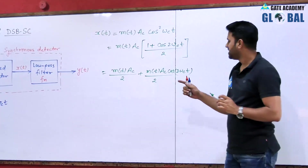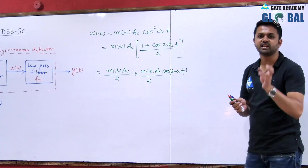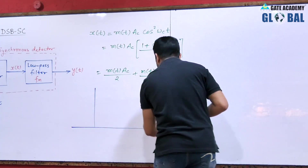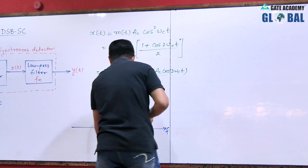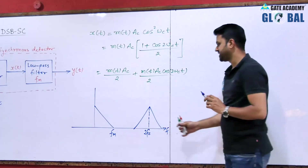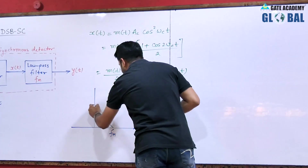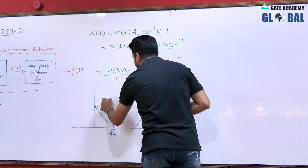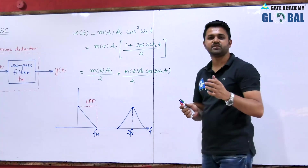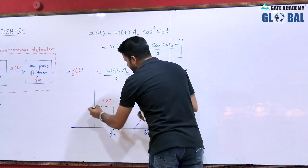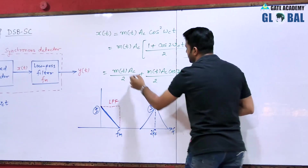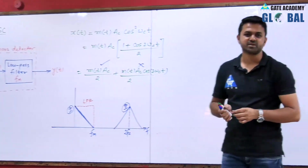There are two terms. The first is m(t) having frequency FM and the second is m(t)·cos(2ωC·t) centered at 2FC. If we draw the spectrum for the positive side only, we get a component at FM and a component centered at 2FC ± FM. Since we have placed a low pass filter with cutoff frequency FM, it will pass only frequency components less than FM. The first term passes through the low pass filter and the second term is rejected.